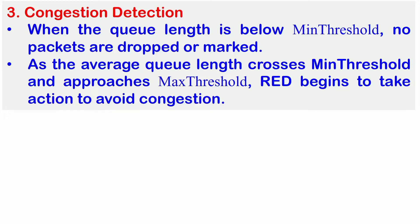When the queue length is below the min threshold, no packets are dropped or marked. As the average queue length crosses the min threshold and approaches the max threshold, RED begins to take action to avoid congestion. If the queue remains below the minimum threshold, no action is taken, but as it nears the maximum threshold, RED initiates actions to prevent congestion.